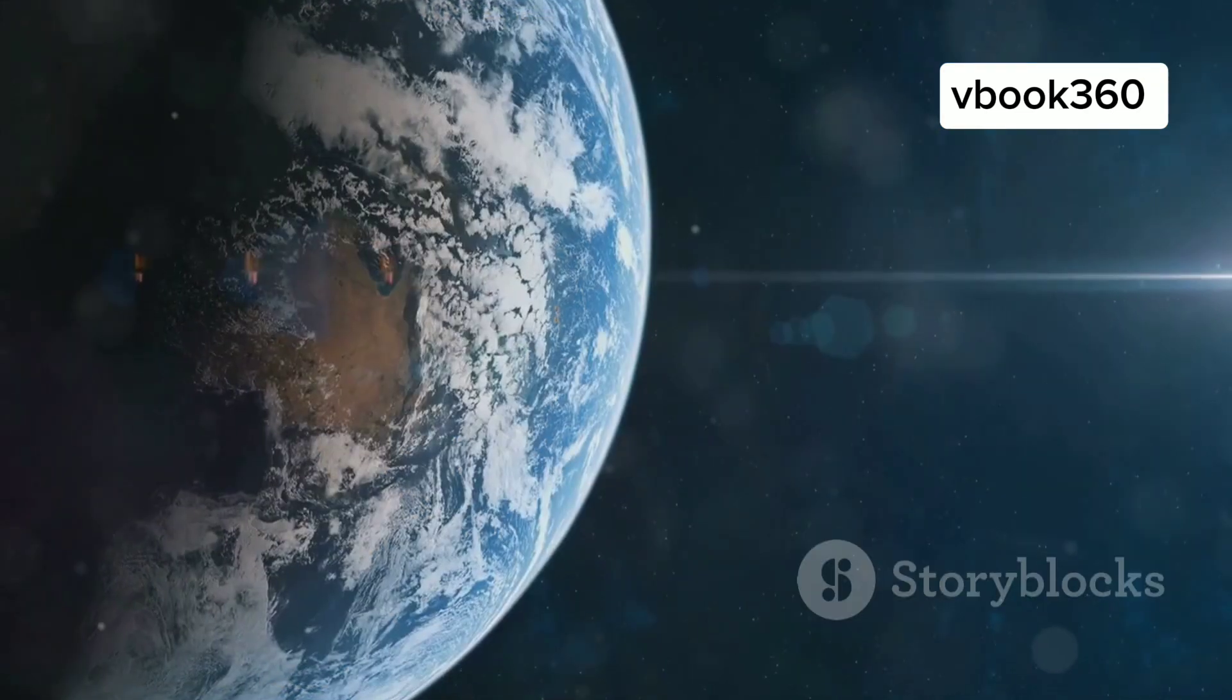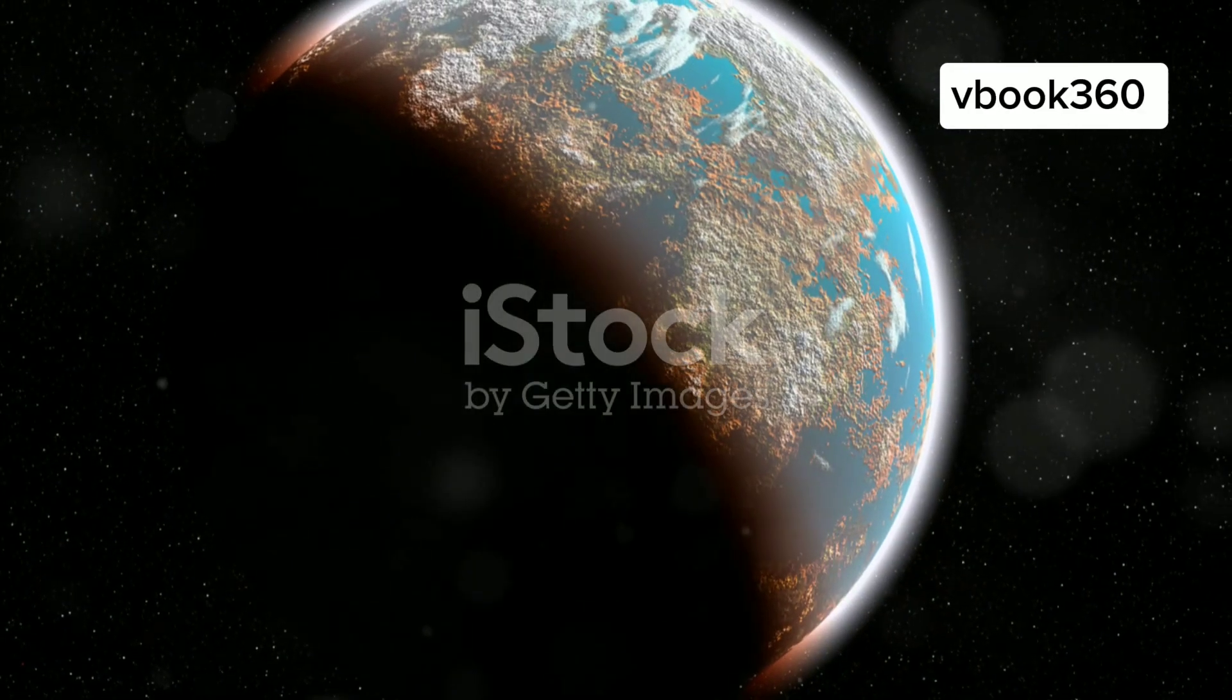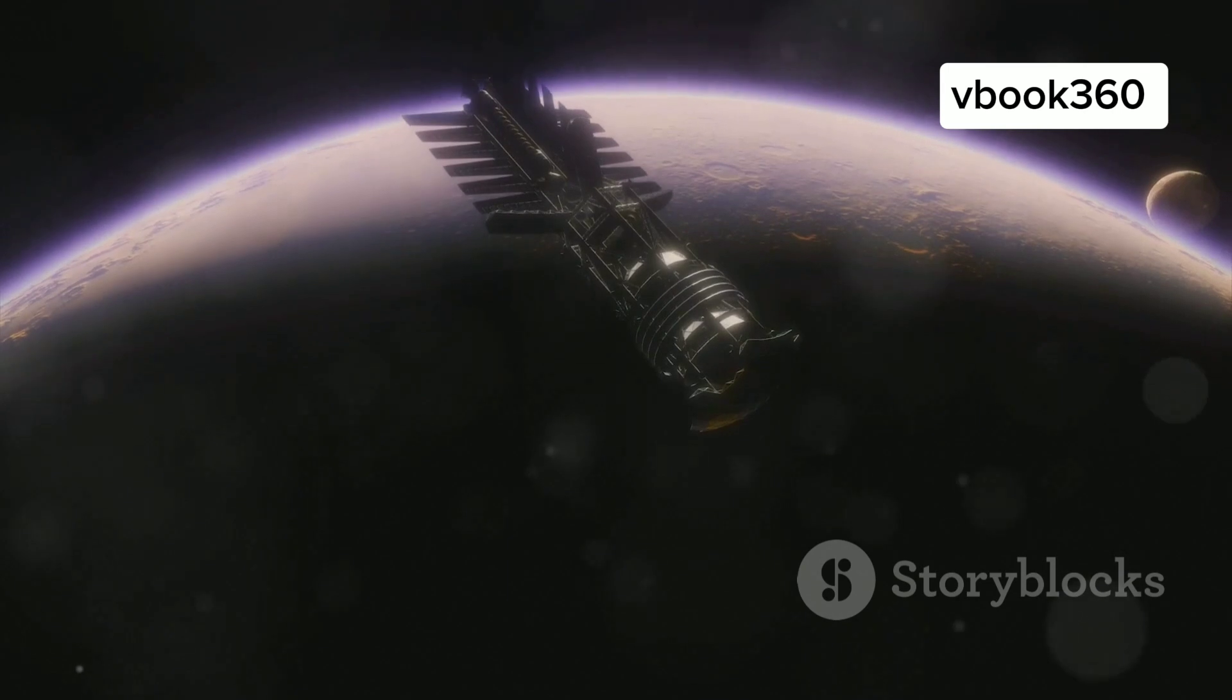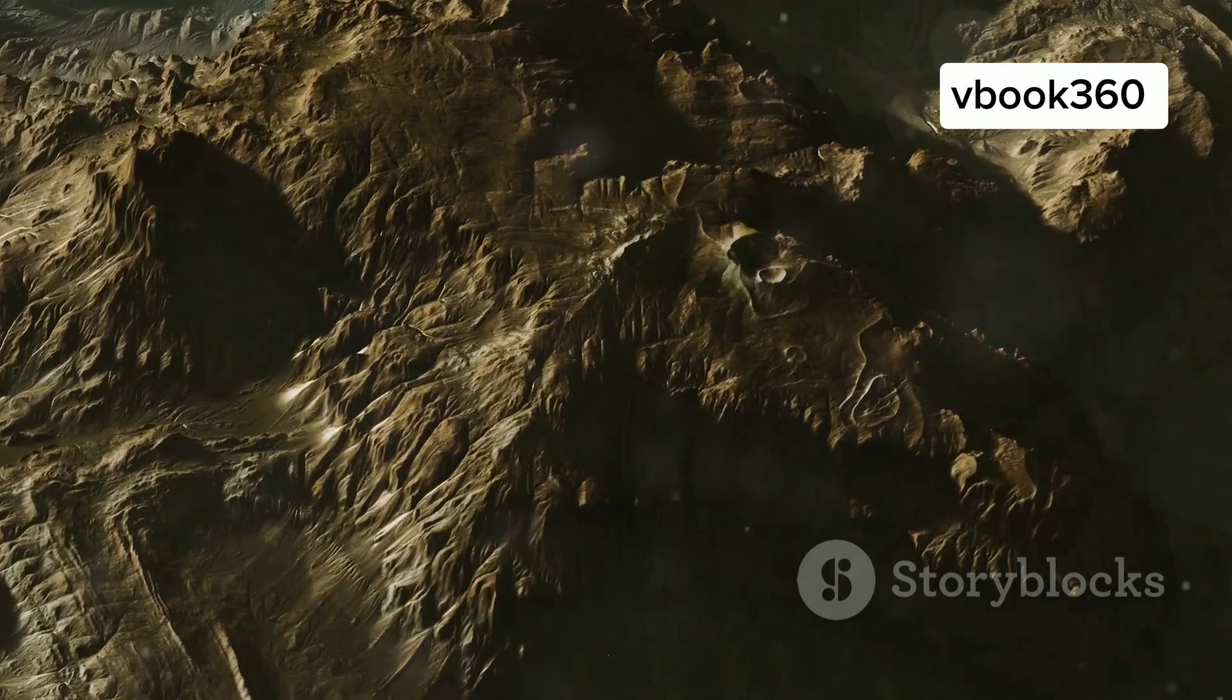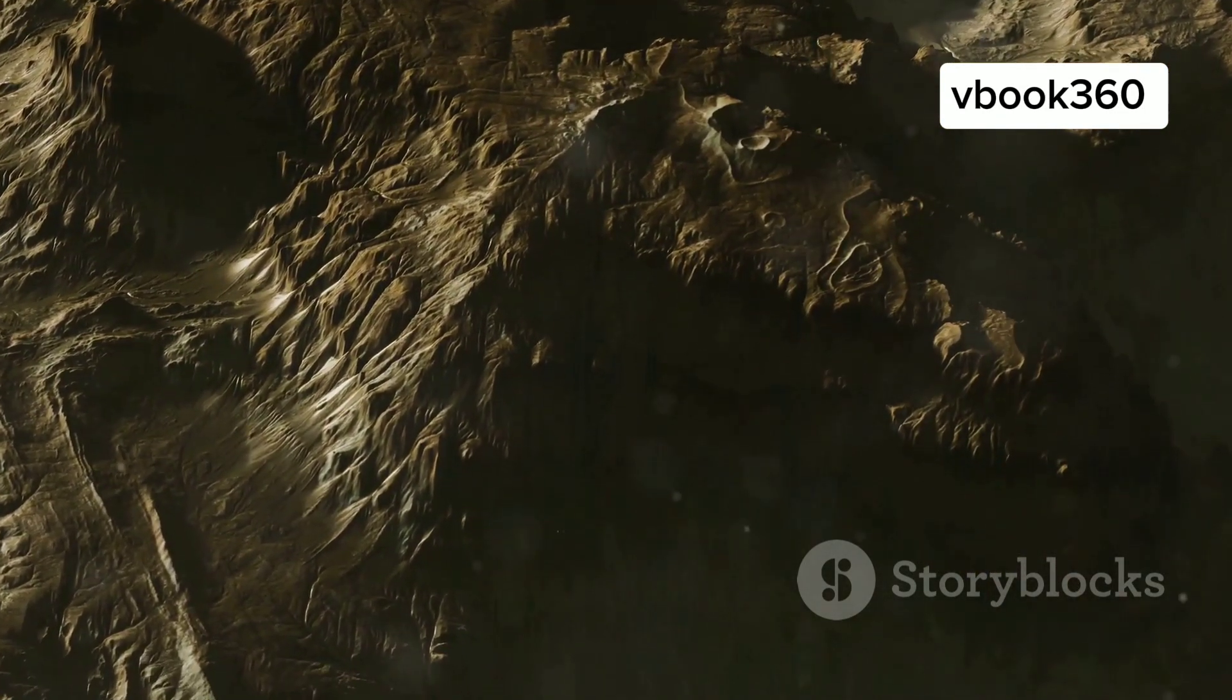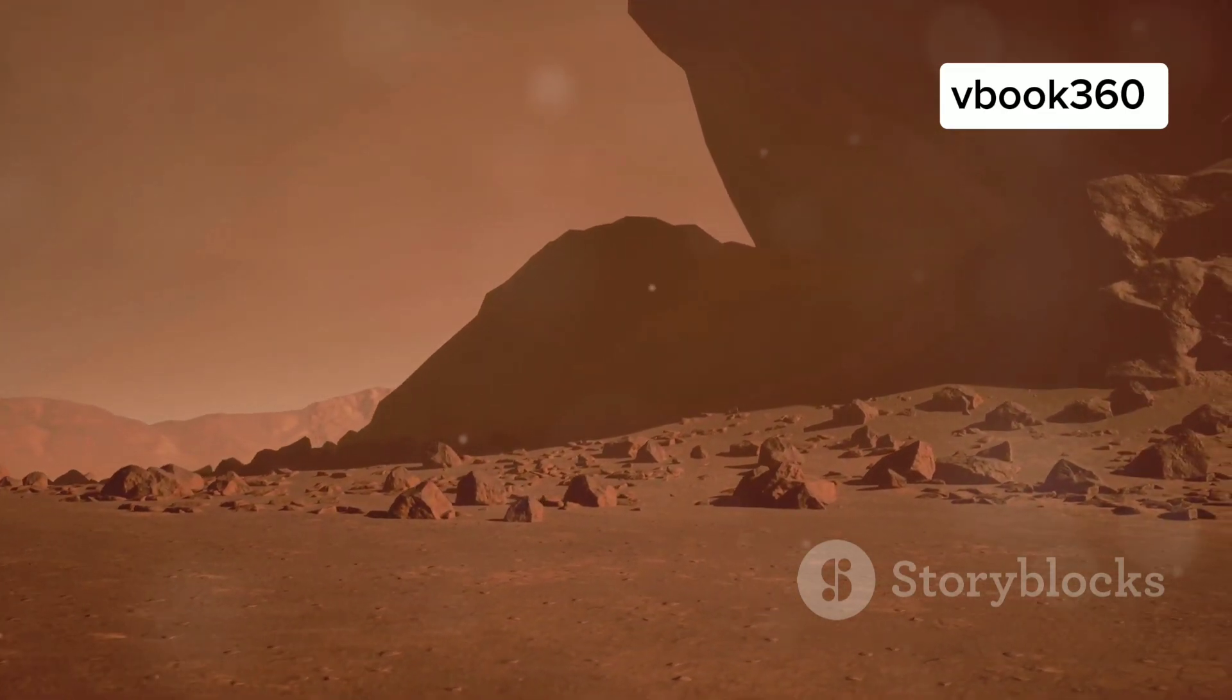While our telescopes can detect the presence of Earth 2.0 and reveal some of its basic properties, they can't yet provide us with a detailed view of its surface. That hasn't stopped scientists and artists alike from imagining what this alien world might look like. One possibility is that Earth 2.0 is a water world, its surface covered in vast, shimmering oceans. Alternatively,